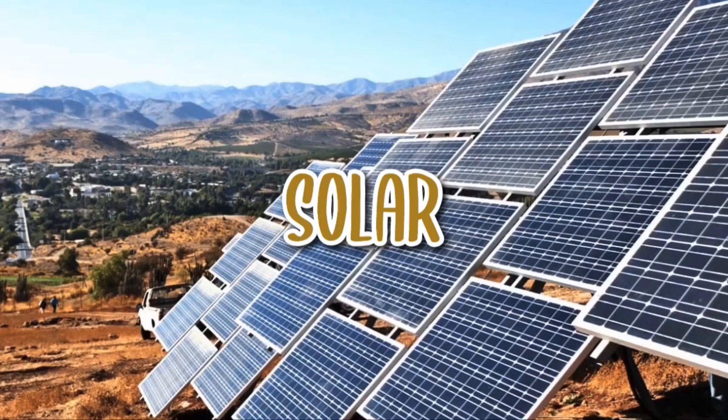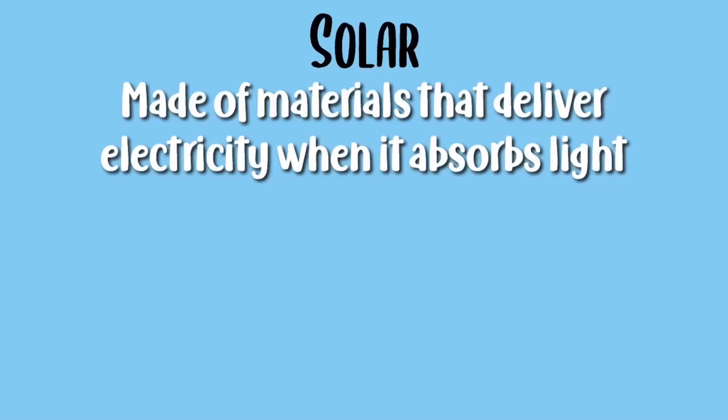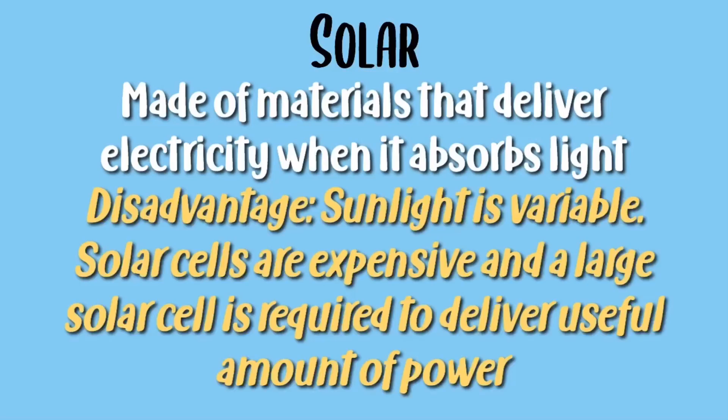Solar cells are also an example of renewable energy. They are made of materials that deliver electricity when they absorb light. The disadvantages are that sunlight is variable, solar cells are expensive, and a large solar cell array is required to deliver useful amounts of power.